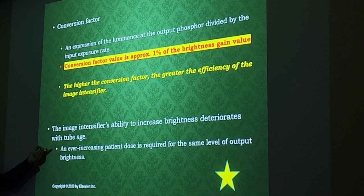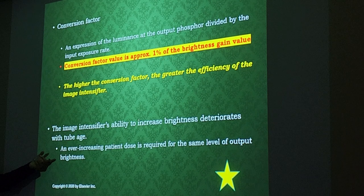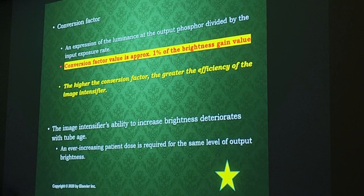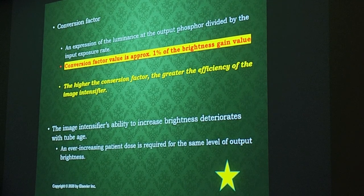To compensate for the aging intensifier, you would have to increase the patient dose — meaning increase the mA, which gives you more electrons. That's what you would have to do to get the same level of brightness. So as the intensifier ages, you need more radiation to produce the same level of output brightness.